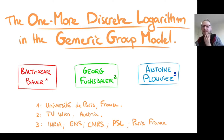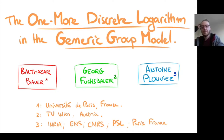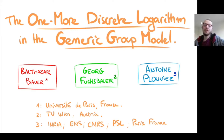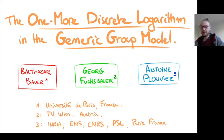Hi everyone. This is a video talk on the one more discrete logarithm in the generic group model. This is a work done together with Balthazar Bauer, Georg Fuchsbauer, and myself, Antoine Plouvier. In this work, we give the first proof of security for the one more discrete logarithm in the generic group model.